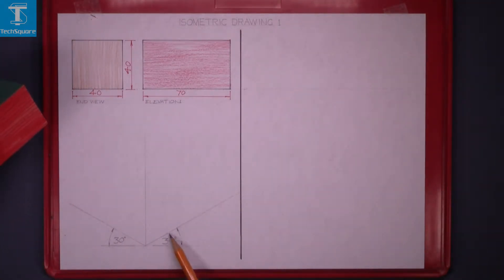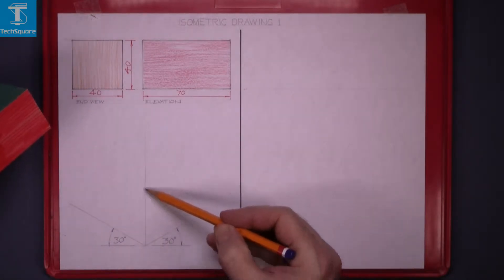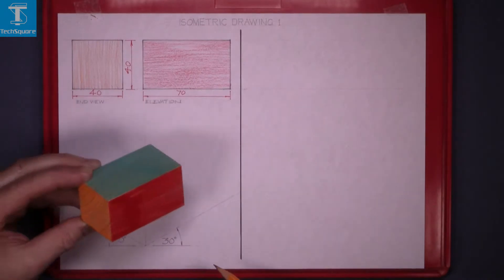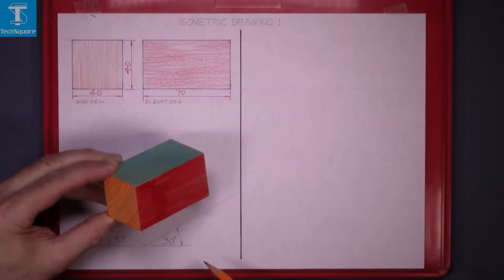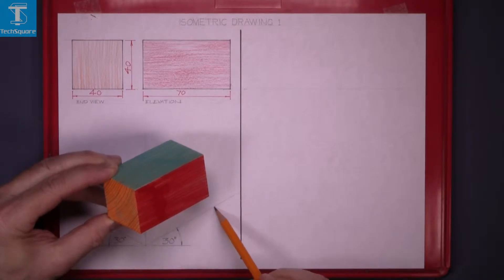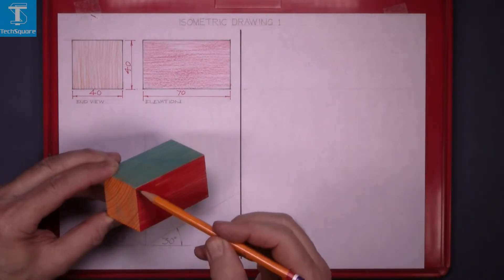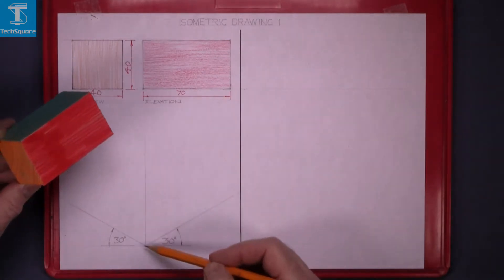Isometric drawing is at 30 degrees in both directions and a line vertical. So that is what we will see there. This line represents this corner and this line represents this corner. And the vertical line there is the vertical line here.